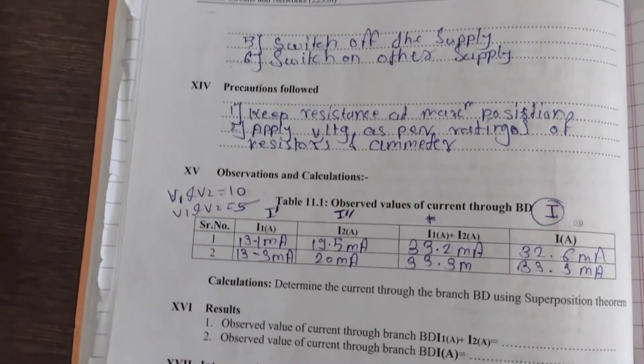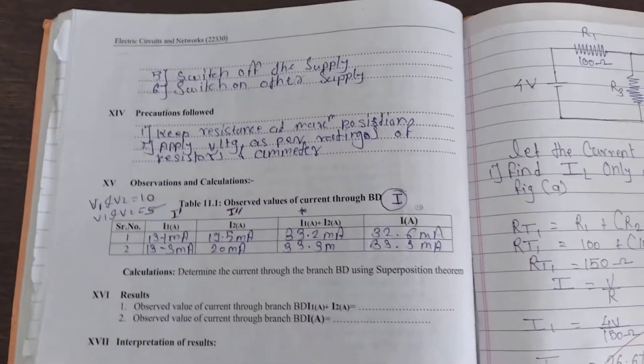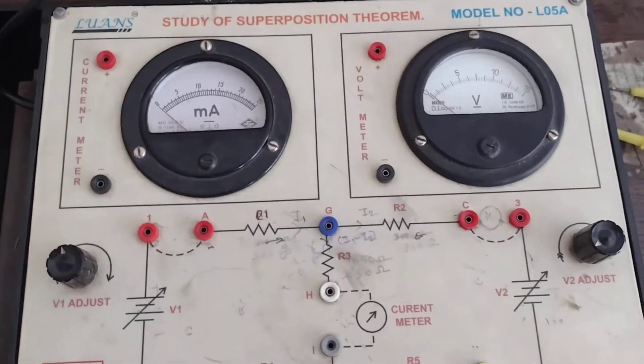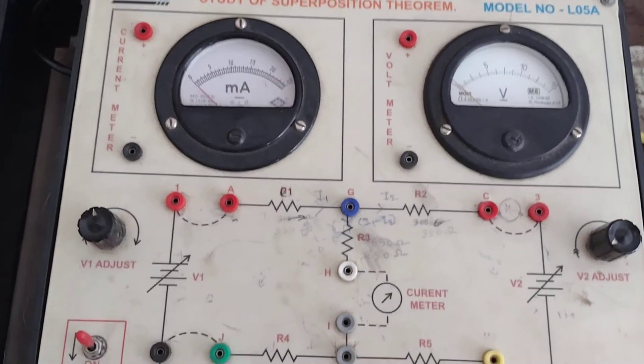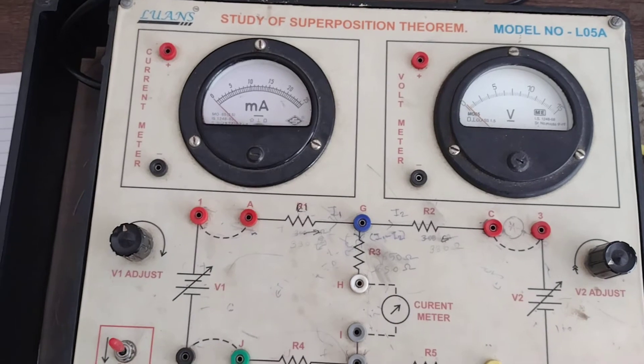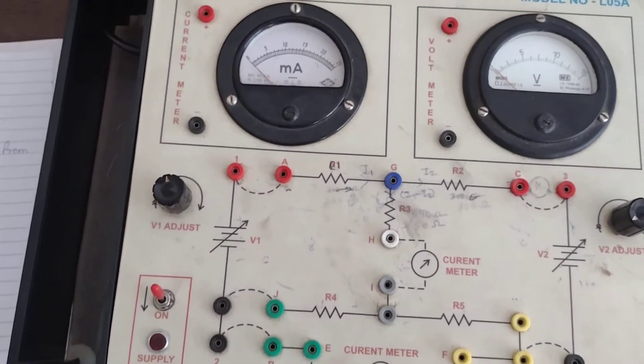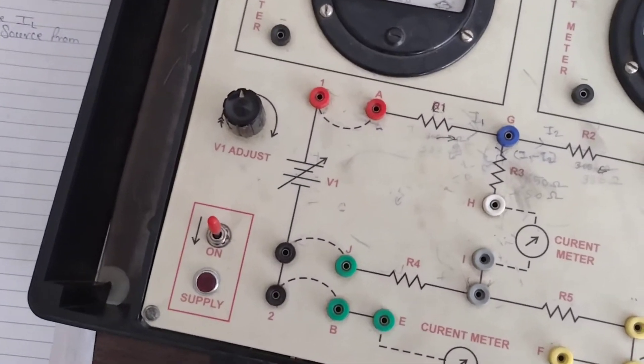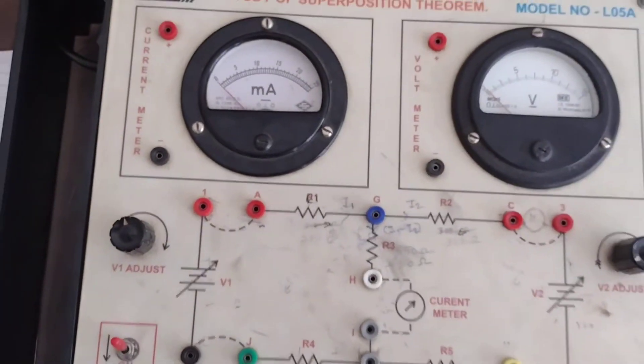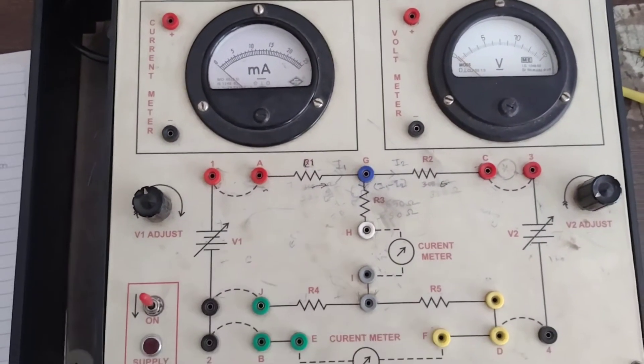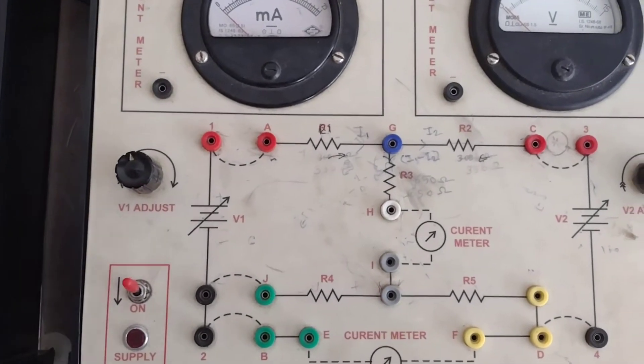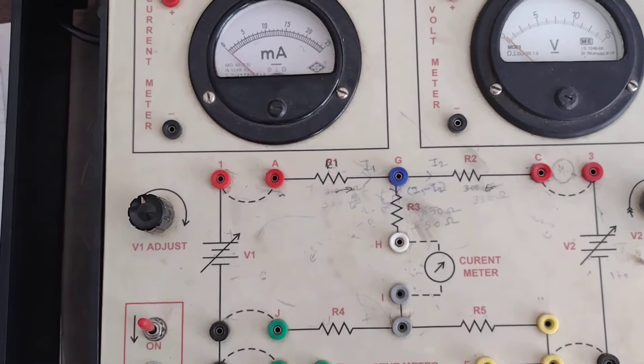Now we will look at the actual setup. Here is the Superposition Theorem kit. First, what we will do is connect the V1 voltage source.